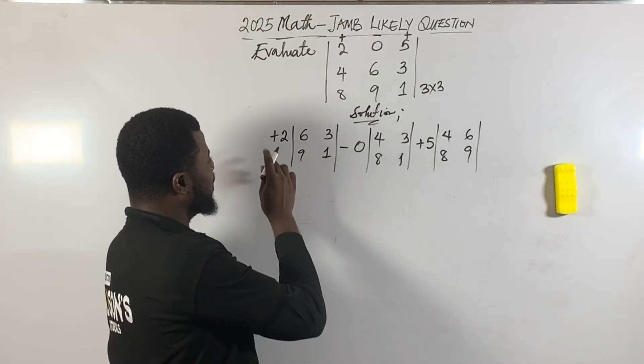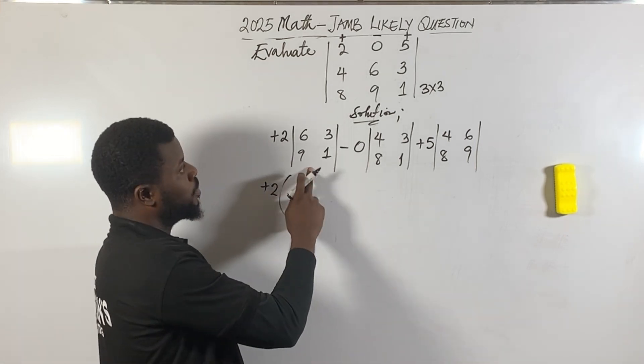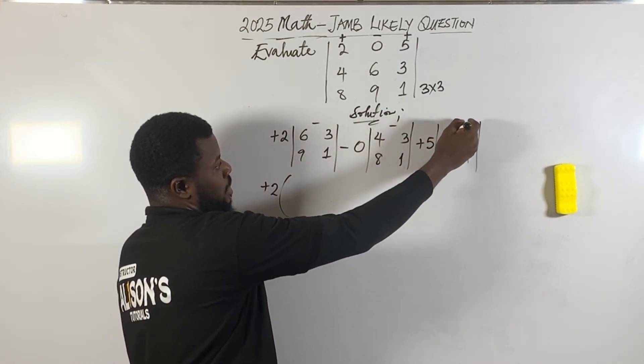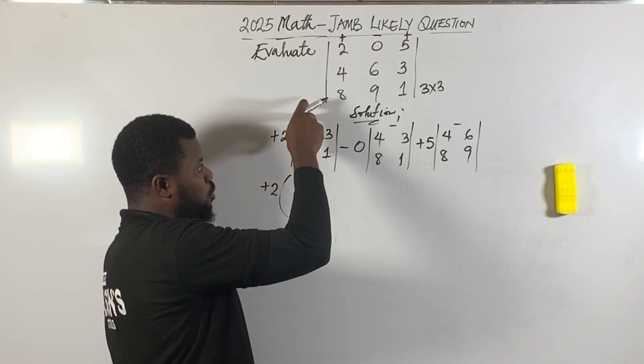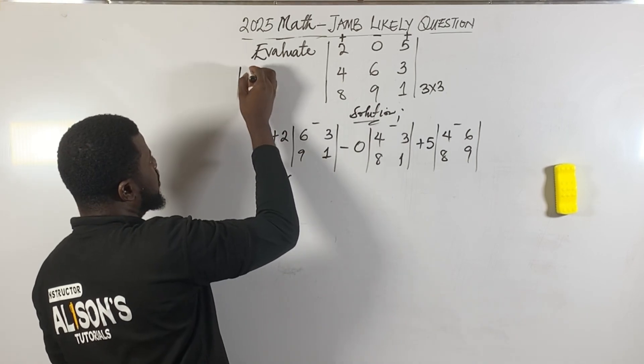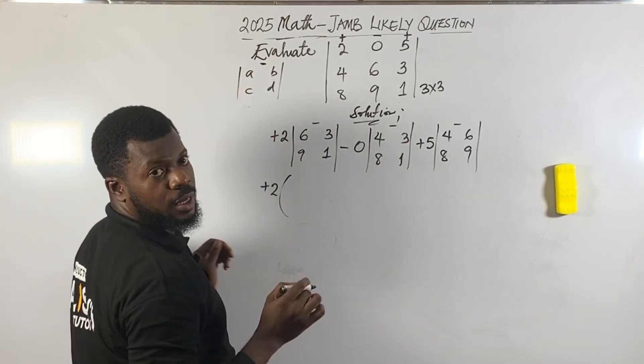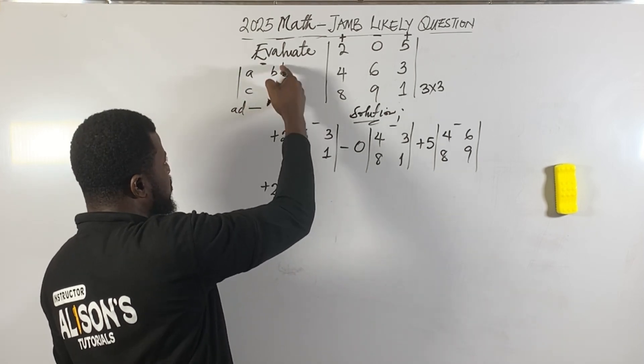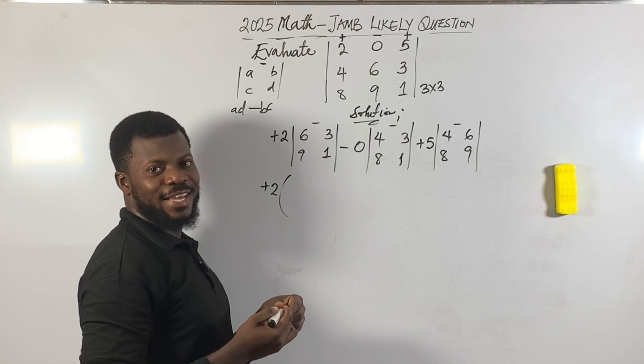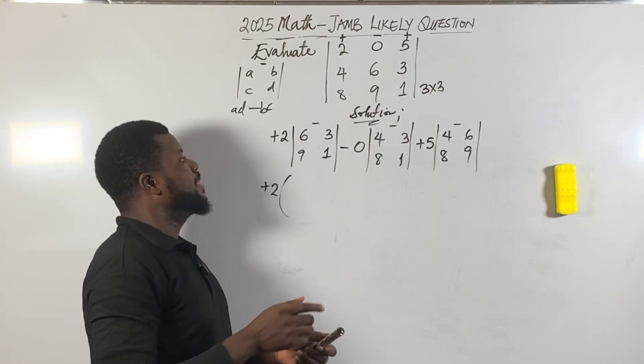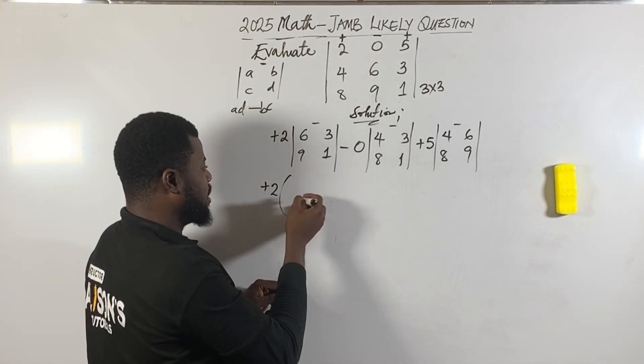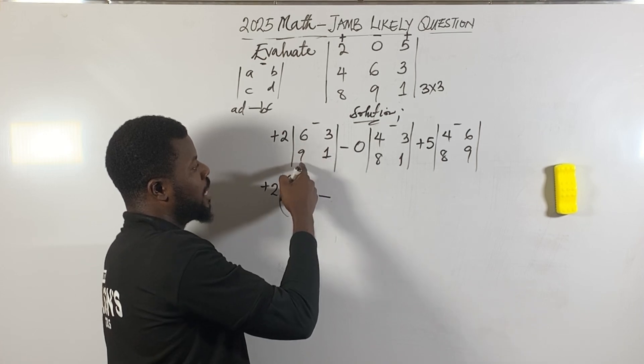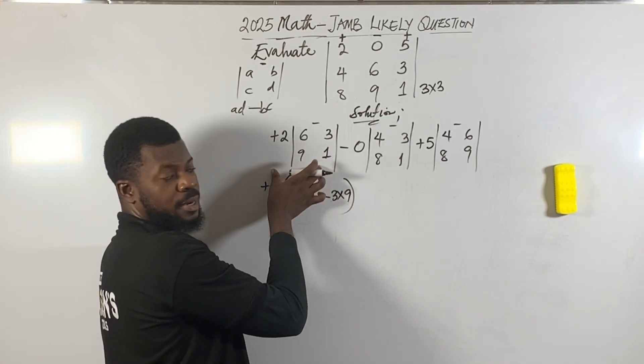This plus 2 - you can open this particular bracket because this forms a 2 by 2 matrix. For a 2 by 2 matrix: if you get a, b, c, d, the determinant is ad minus bc. So now 6 times 1 minus 3 times 9. Six times 1 is 6, minus 3 times 9 which is 27.